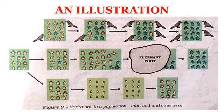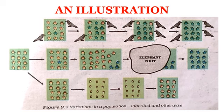An illustration. Consider a group of 12 red beetles that live, let us assume, in some bushes with green leaves. Their population will grow by sexual reproduction and therefore can generate variations. Let us imagine also that crows eat these beetles. The more beetles the crows eat, the fewer beetles are available to reproduce. Now let us think about some different situations that can develop in this beetle population.